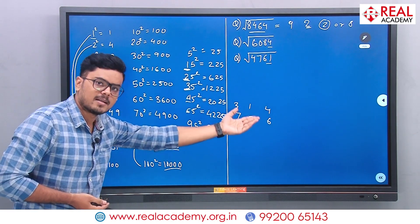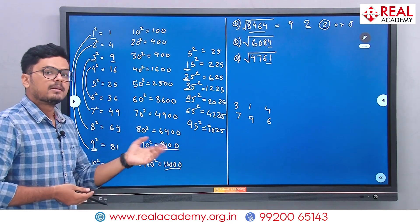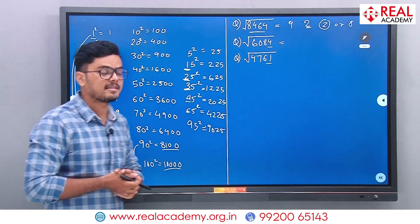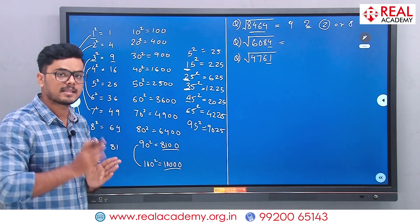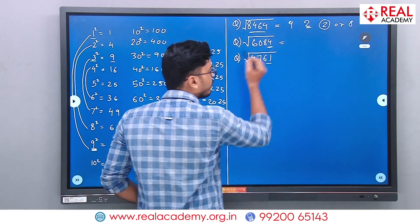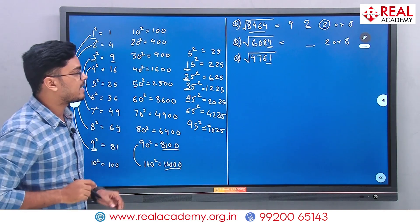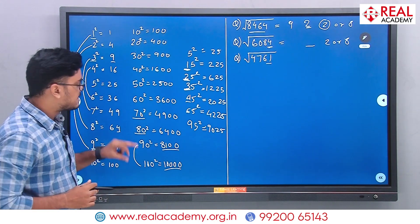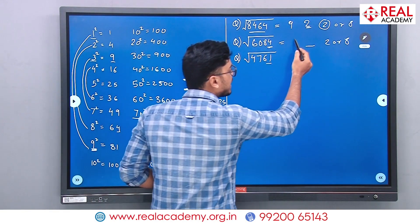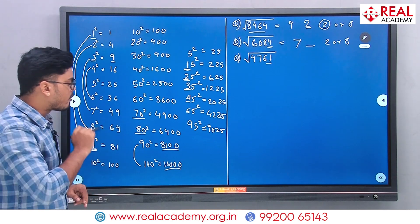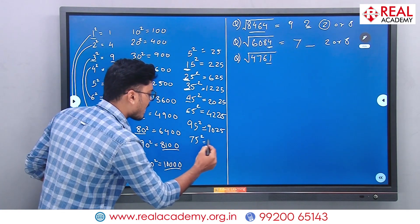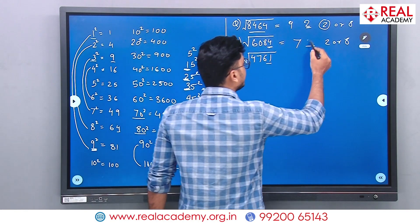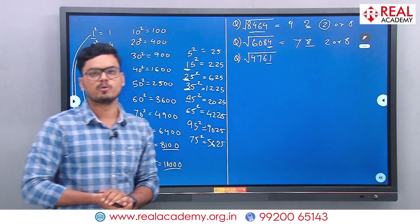Let us solve √6084 quickly. The units digit is 4, so units place of the answer is 2 or 8. The range is between 70 squared (4900) and 80 squared (6400), so tens place is 7. Now find 75 squared: 7×8=56, so 75 squared is 5625. Since 6084 is greater than 5625, the answer is 78.